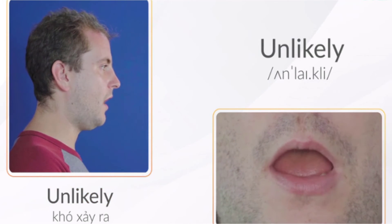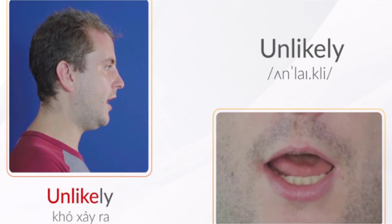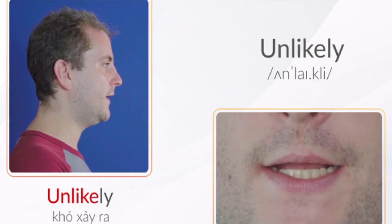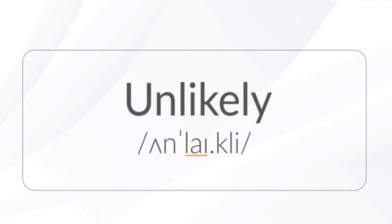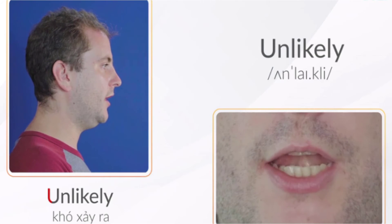Unlikely. Từ này có 3 âm tiết, trọng âm rơi vào âm tiết thứ 2 các bạn nhé. Âm tiết đầu tiên có chữ âm A ngắn, các bạn không nhầm với U nhé. Âm tiết thứ 2 có chữ nguyên âm đôi. Âm tiết thứ 3 bắt đầu bằng 2 phụ âm K và L: CL, CL.